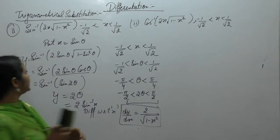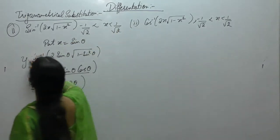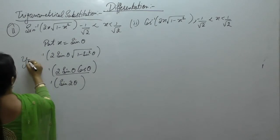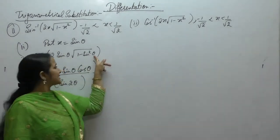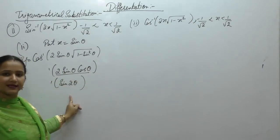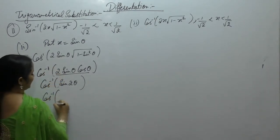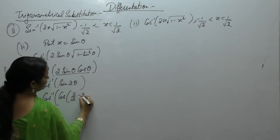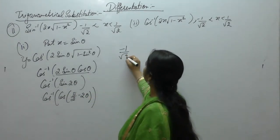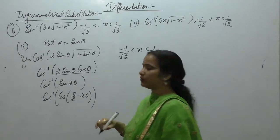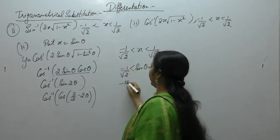For the second part, y equals cos inverse of 2 sine theta times square root of 1 minus x squared. Using cos squared, that gives 2 sine theta cos theta which is sine 2 theta. But we have cos inverse, so we can write sine as cos of 90 minus theta. The limits are minus 1 upon root 2 less than x less than 1 upon root 2, and since x equals sine theta, 1 upon root 2 is sine π/4, giving minus π/4 less than theta less than π/4.